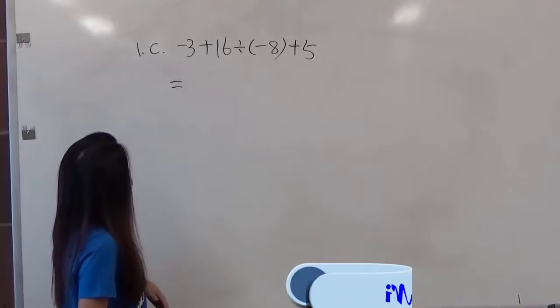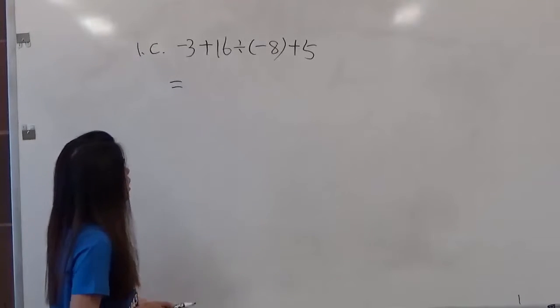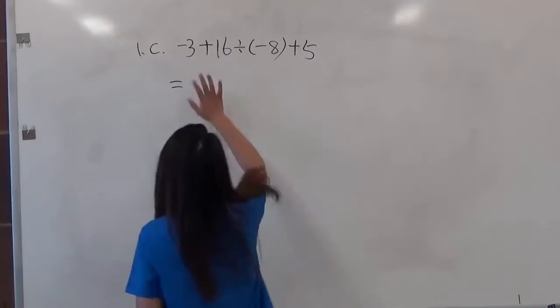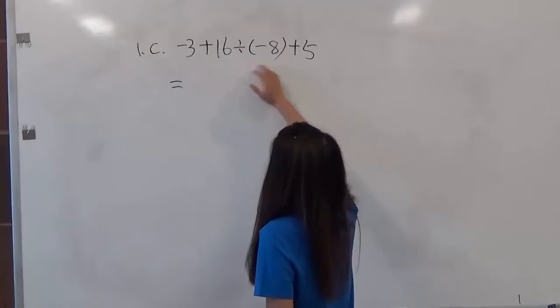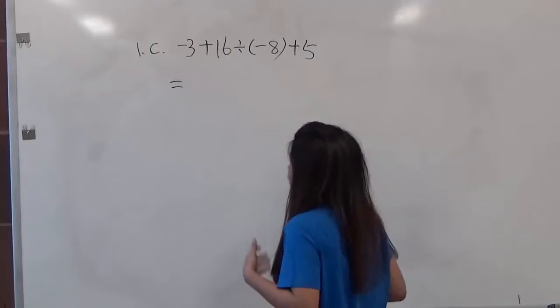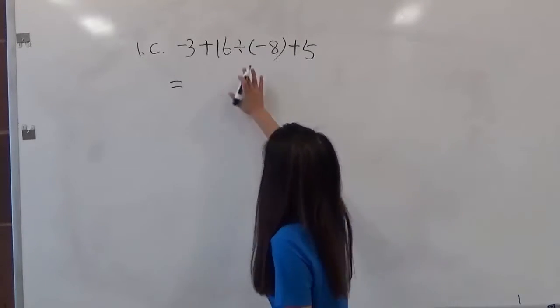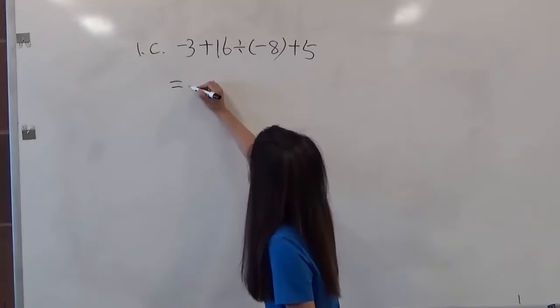So we get negative 3 plus 16 divided by negative 8 plus 5. Since we have addition, then division and addition, by following order of operations, we need to calculate the division first.